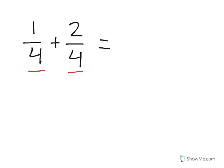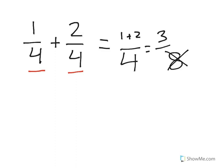Once you've determined that the denominators are the same, you're going to write a four as the denominator in your answer. The denominator never changes — we're never going to say four plus four is eight, that's a big no-no. We carry the denominator straight across. Now we're going to add the numerators: one plus two. So our answer is three fourths.